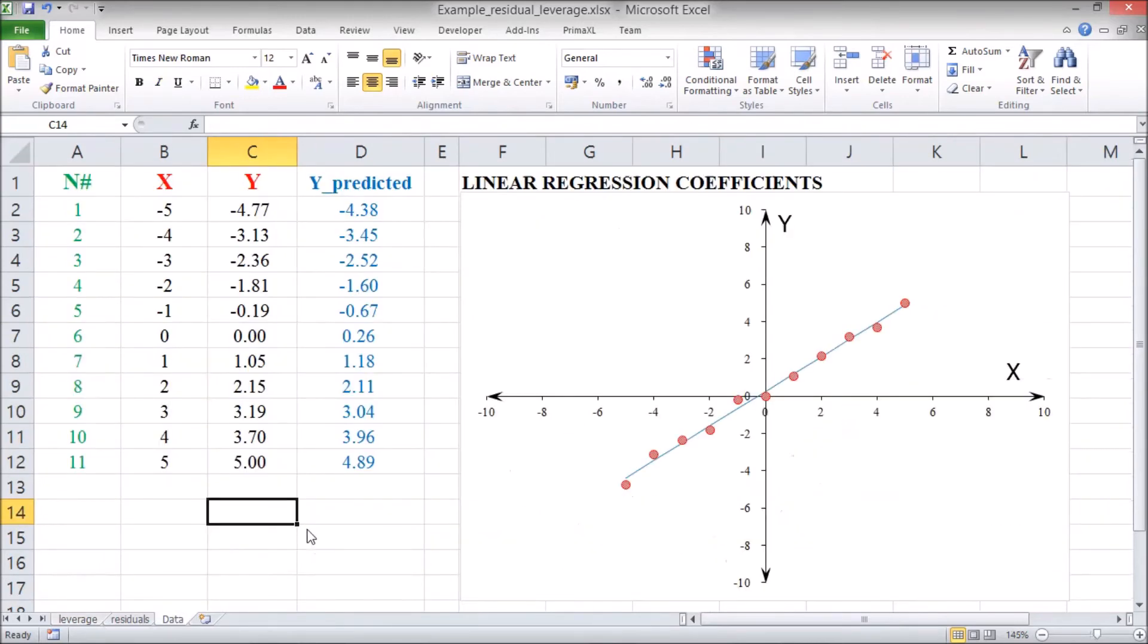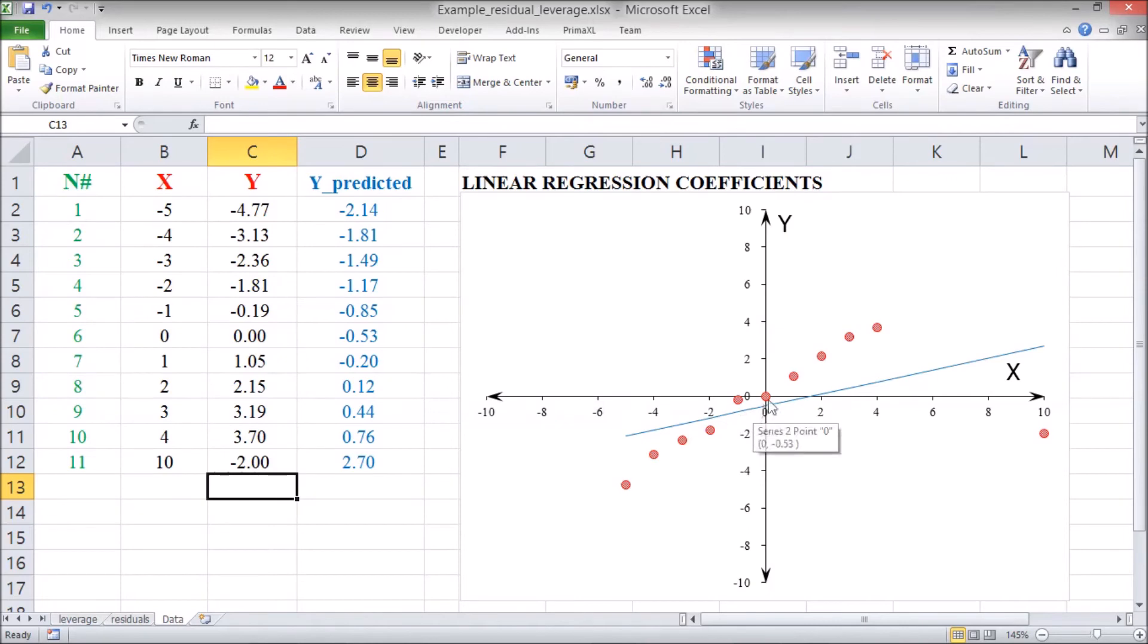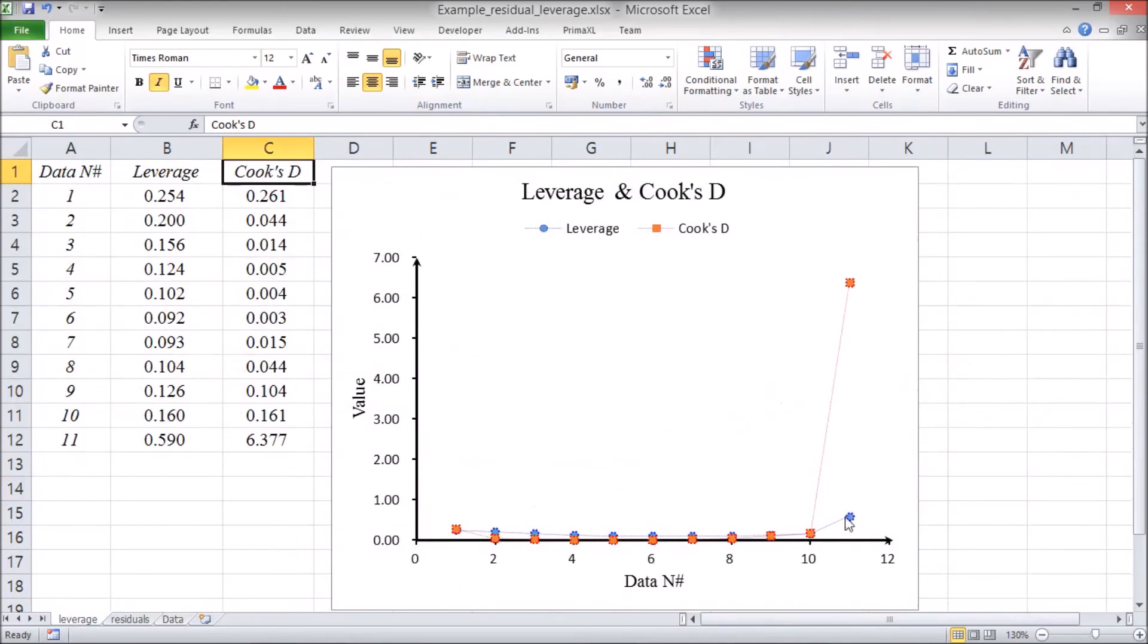Back to the datasheet, let us change the x value at a high leverage position. So, this position has even higher leverage. Then, we also change the y value. These changes would cause a very large influence on the regression result. We can notice that the estimation line is now completely off from the general trend. We can verify that both the Leverage and the Cook's distance have become quite large at this particular position.